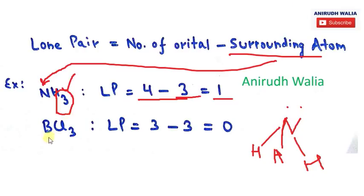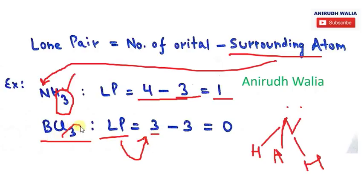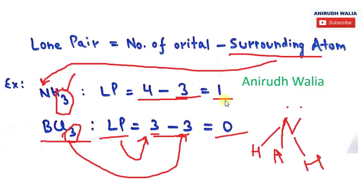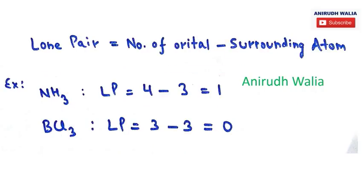For BCl3: number of orbitals is 3. Surrounding atoms for boron: 3 chlorine atoms are surrounded, so surrounding atom = 3. Lone pair = 3 − 3 = 0. So in BCl3 (boron trichloride), there are no lone pairs.